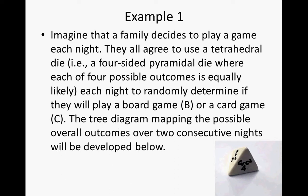Let's take a look at Example 1. Imagine that a family decides to play a game each night. They all agree to use a tetrahedral die — an example of a four-sided pyramidal die — where each of the four possible outcomes is equally likely. Here is a picture of one below. Each night they roll the die to randomly determine if they will play a board game, denoted as B, or a card game, denoted as C. The tree diagram mapping the possible overall outcomes over two consecutive nights will be developed.